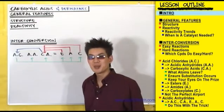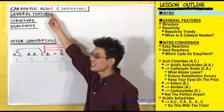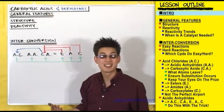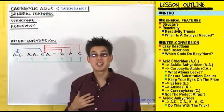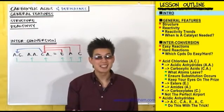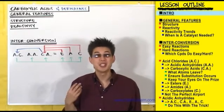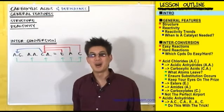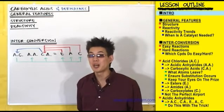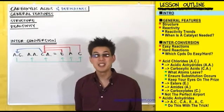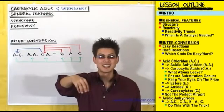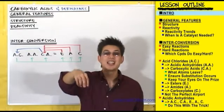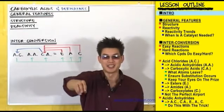Today we're going to be talking about carboxylic acids and the derivatives of carboxylic acids. This is a really important chapter in organic chemistry because carboxylic acids are one of the most useful compounds we have. They are very flexible compounds, meaning that you not only can turn many different types of compounds into carboxylic acids, but you can also turn carboxylic acids into many different types of compounds.